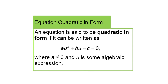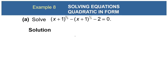Equations quadratic in form: an equation is said to be quadratic in form if it can be written as au² + bu + c = 0, where a ≠ 0 and u is some algebraic expression. We're going to use what we call u-substitution — replacing the expression with u to make it easier to solve, either by factoring or the quadratic formula.